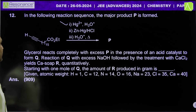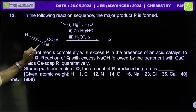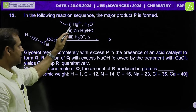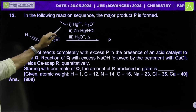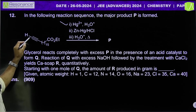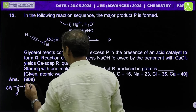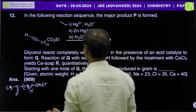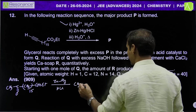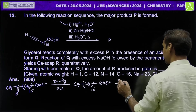Let's come to the next question — simple but very interesting. An alkyne ester reacts with three reagents to form product P. First reagent: mercury cation with H3O+ — this hydrates the alkyne. The alkyne undergoes hydration to give a carbonyl product. Second reagent: zinc-mercury HCl (Clemmensen reduction) — the carbonyl C=O is reduced to CH2.